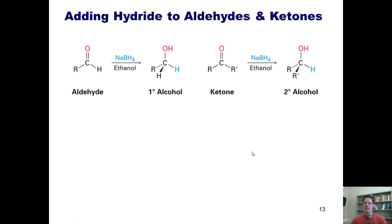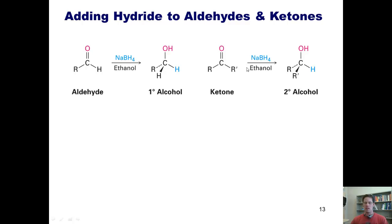We'll now address the addition of hydride to aldehydes and ketones. I want to remind you of something from Chapter 16: one way to quickly spot a reduction reaction in organic chemistry is to see if a molecule has gained bonds to hydrogen. If it has, we can usually say that the molecule has been reduced. The hydride reactions I'm going to show you involve using sodium borohydride, NaBH4, reacted with an aldehyde or a ketone. Treating an aldehyde with NaBH4 followed by an ethanol or acid quench converts it to a primary alcohol, while a ketone under the same conditions gives a secondary alcohol.